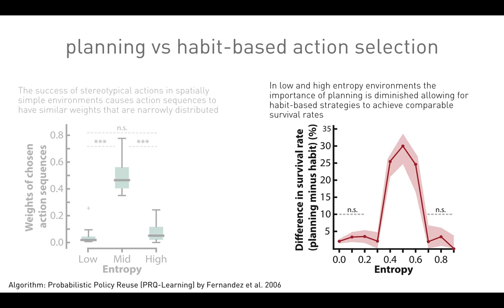If we look at the difference in survival rate — planning minus habit — we see a very focal signal for the utility of planning in mid-range or high-complexity environments.